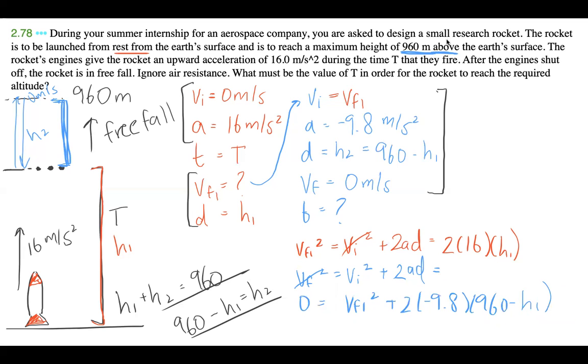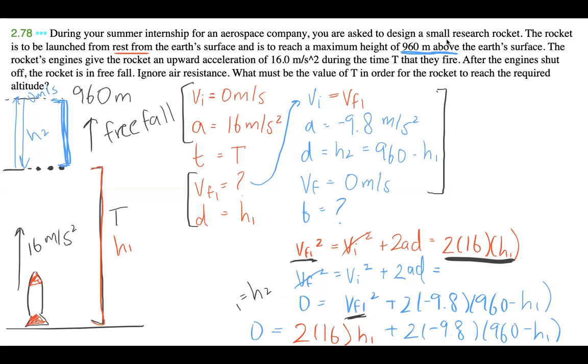And now something really interesting you can notice here is that we have two equations, two unknowns. So what we can do is we can either use substitution or we can use elimination. In this scenario, I'm going to see that because VF1 squared is right over here, I'm just going to use substitution. So I'm just going to substitute this red value in right here. So we have zero is equal to 2 times 16 h1 plus 2 times negative 9.8, 960 minus h1. And I'm going to simplify this equation. But before I go ahead and do that, I'm just going to erase some of this board so that it's easier to continue.